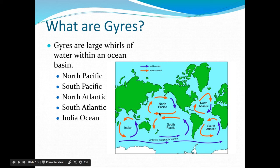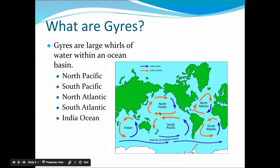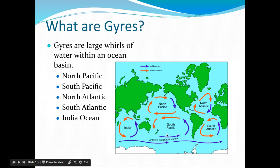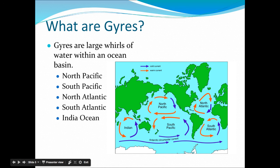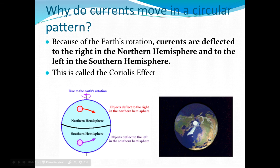You may have noticed that the North Pacific and North Atlantic gyres move in a clockwise direction — and you would be correct. The ones in the South Pacific, South Atlantic, and Indian Ocean, which are in the southern hemisphere, go counterclockwise. It is not a coincidence that all the ones in the north move one way and all the ones in the south move the other. That is the Coriolis effect.